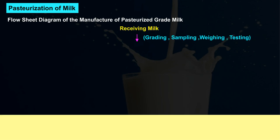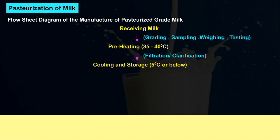The flow sheet steps are: receiving milk, grading, sampling, weighing, testing, preheating to 35–40°C, filtration, clarification, then cooling and storage at 5°C or below.